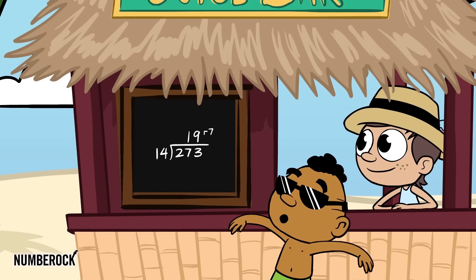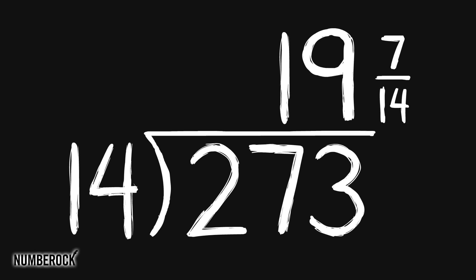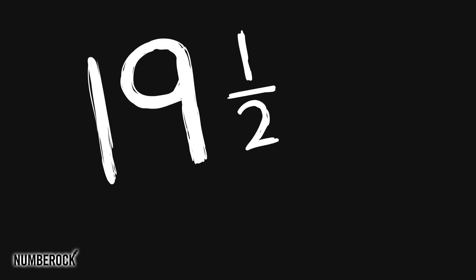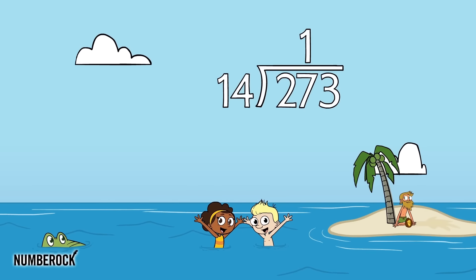Now let's see what the remainder really means. Our 7 can be written as 7/14 since 14 is the divisor. It's the whole, the remainder is the part, and that is its role. So 19 and 7/14 is the quotient, and 19 and a half is its equivalent and its simplest form.